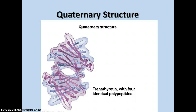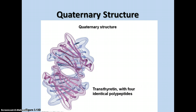Here's a picture of transthyretin with four identical polypeptide chains stacked on top of each other in a particular way. The whole molecule here — the quaternary structure — is how the whole molecule functions.